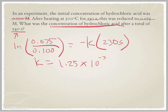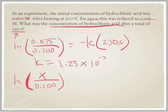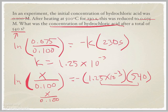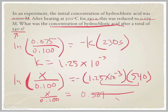Now that you have the rate constant, you can find the concentration at 540 seconds. Set up: natural log of (X / 0.1) = negative 1.25×10⁻³ times 540. Multiply the right side first, then take the anti-log of both sides so you get (X / 0.1) = 0.509. Multiply 0.509 by 0.1 and you get X = 0.0509, which is the concentration of HCl at 540 seconds.